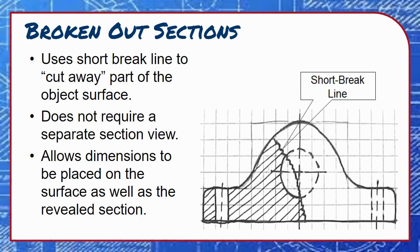Sometimes it's useful to show section view details without drawing an entirely new view. Broken out sections allow us to do this by peeling back a portion of the object's surface to reveal details underneath. Instead of a cutting plane line in another view, the cut area is defined by a jagged, short break line.